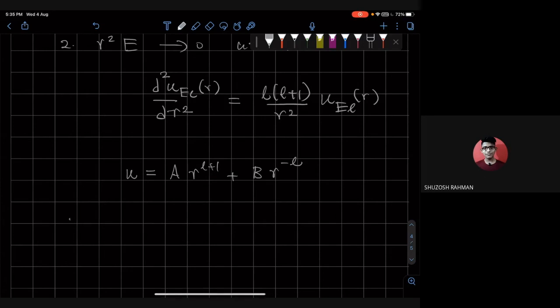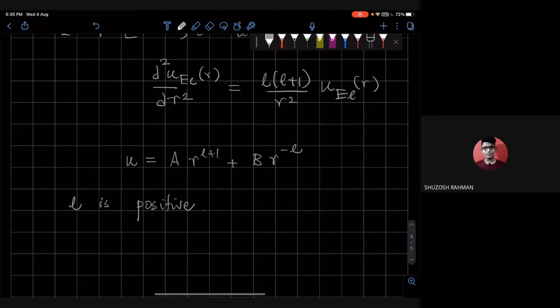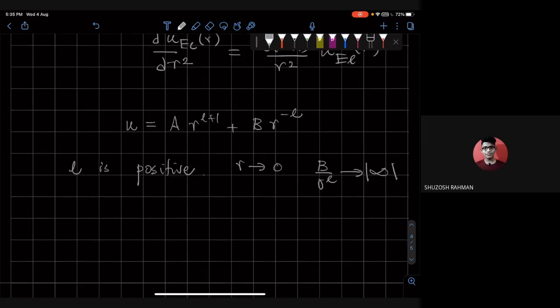But l is positive, l is zero or positive, and we see that as r goes to zero, B over r^l, this diverges. And therefore, we don't expect that to be a physical solution, because then we will have problems with normalization of our wave function. But you might say, hey, because when we do the dr, it's just u squared. There's no r squared here to soften up the singularity.